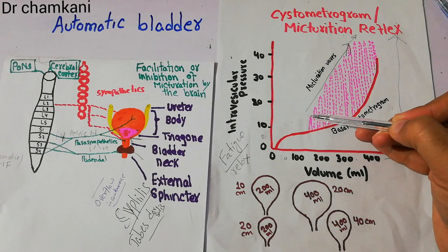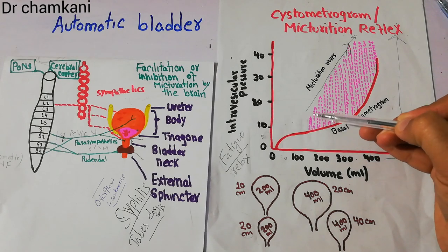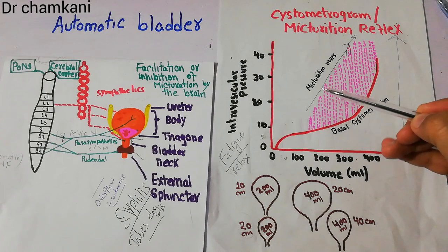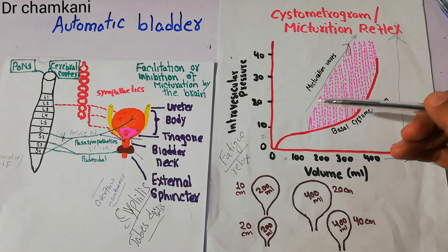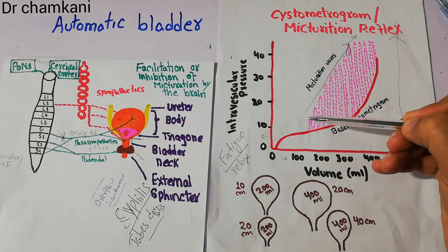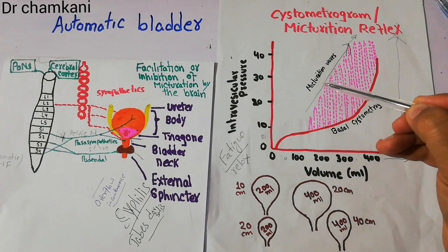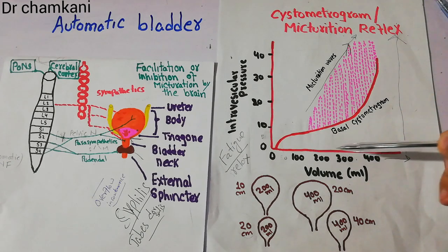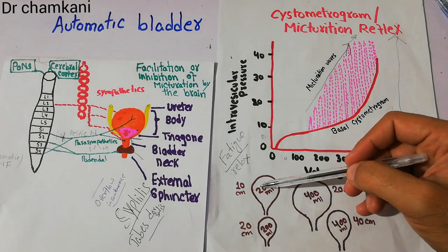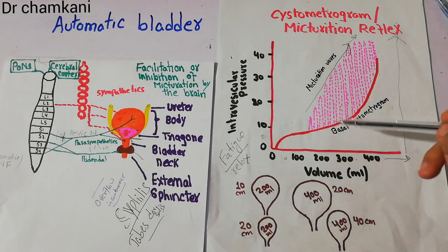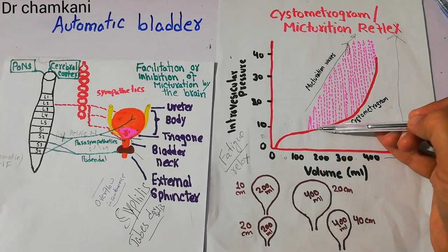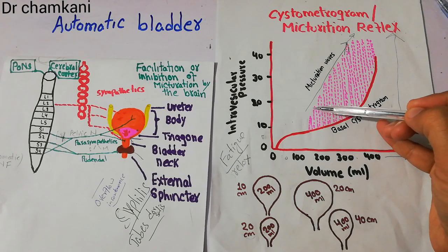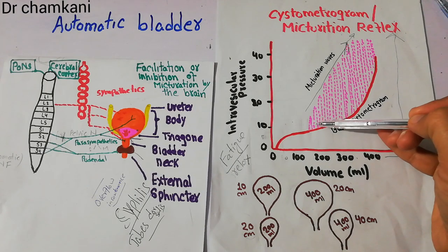These contraction waves occur for some time and then disappear. The frequency and intensity of these waves keep on increasing with increasing volume. For example, at 200 ml, the pressure will be at a certain level, but if micturition waves occur, the pressure will rise and then come down.